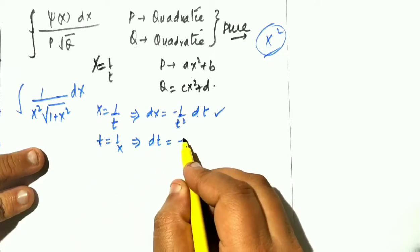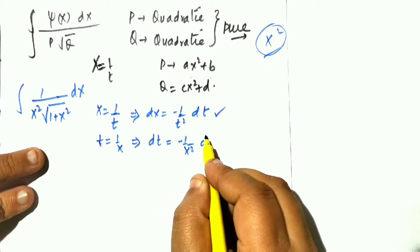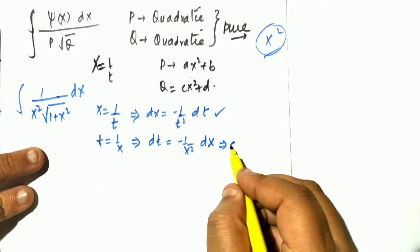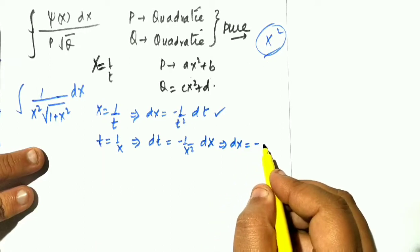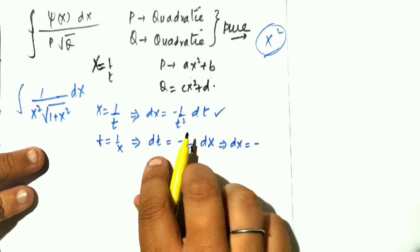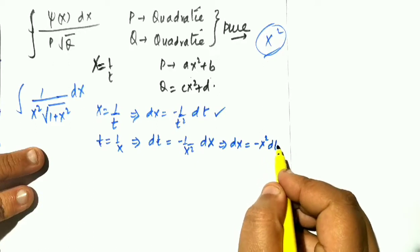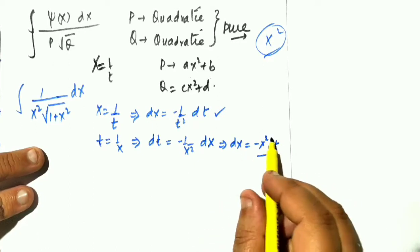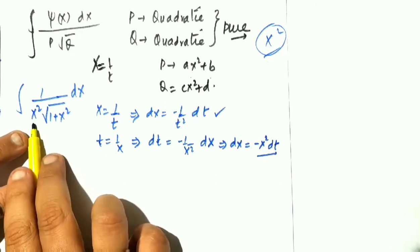So dt equal to minus 1 by x square dx. And we have two options: dx equal to minus x square dt. Why is this what we need? Because we have here directly x square.